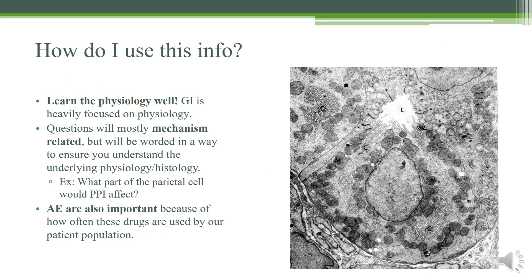So how are you going to use all of this information? It can feel pretty overwhelming, but please learn the physiology well — everything in GI is pretty much tied to the basic physiology. A lot of the questions are going to test your knowledge of physiology even if they're pharmacology related. For example, they'll ask what part of the parietal cells PPIs affect, and you just need to know that PPIs work on the hydrogen-potassium pumps, which are out in the lumen but also inside the Golgi vesicles waiting to be moved. Also, because these drugs are so commonly used, the adverse effects are extremely important for this module. Thank you and good luck.